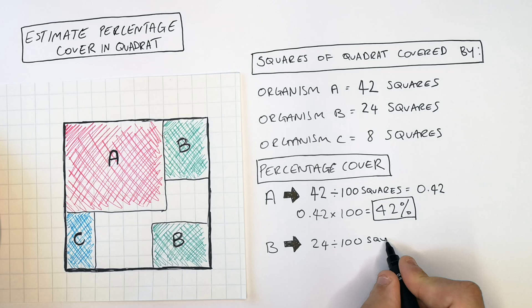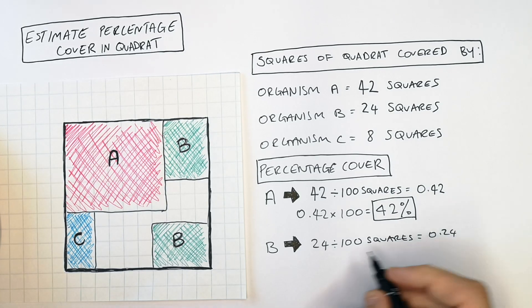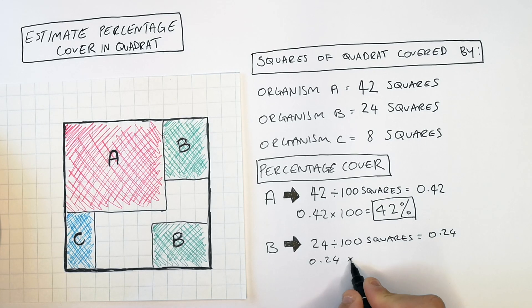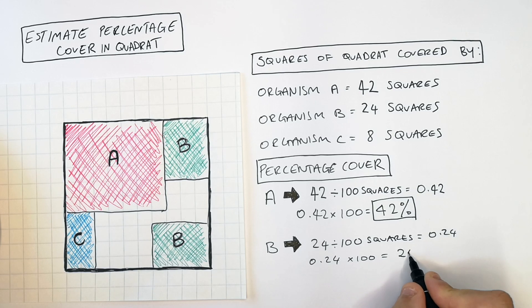24 squares divided by 100 squares which equals 0.24. Then to get a percentage you times it by 100 to get 24% percentage cover.